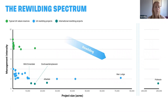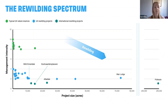With rewilding we look at scale and reduced management intensity. This simplified diagram shows the difference between rewilding projects and typical nature reserves. In the top-left are green dots indicating the size of most UK nature reserves and their high management intensity — because they protect high-quality priority habitats, they tend to have very prescriptive, intensive management requirements to protect priority habitats and species, and are very outcome-focused.